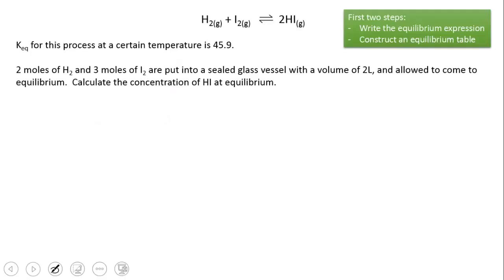We've got the equilibrium between hydrogen, iodine, and hydrogen iodide. We know that Keq for this process at some given temperature is 45.9 and we're told that two moles of